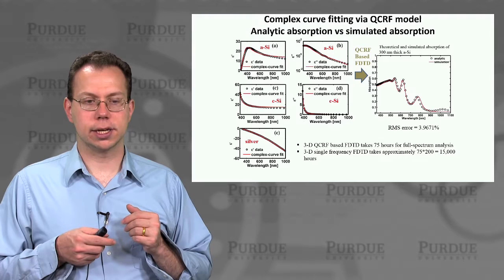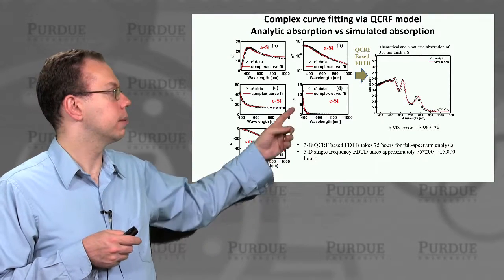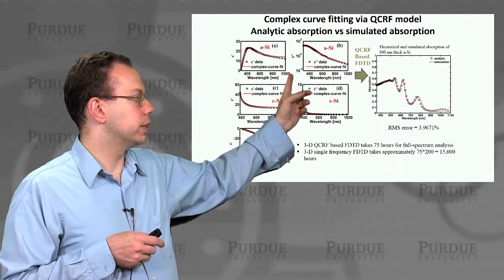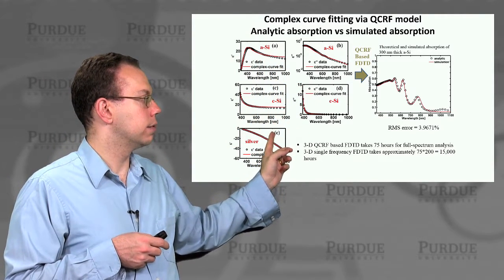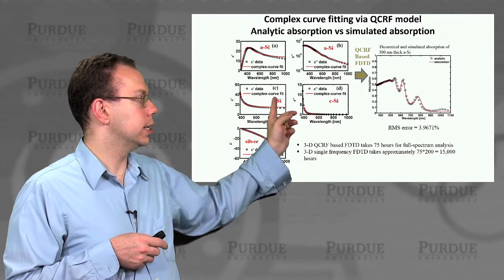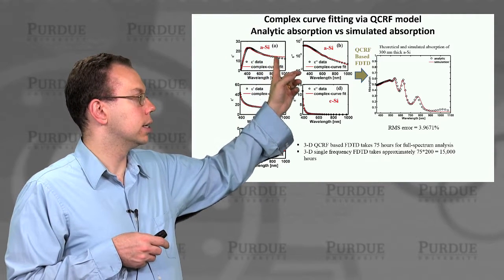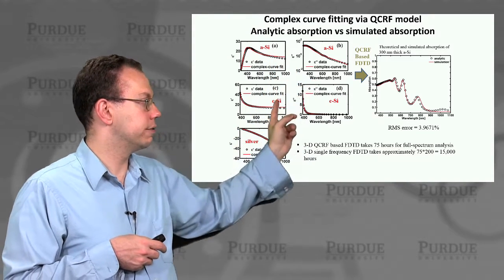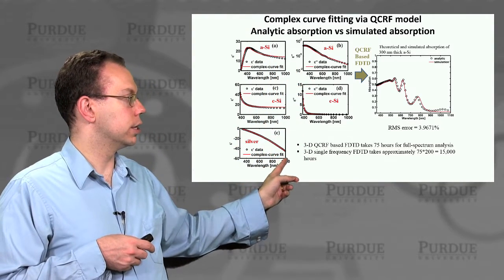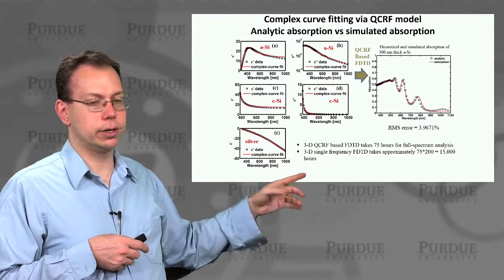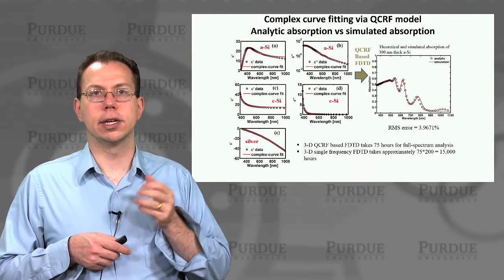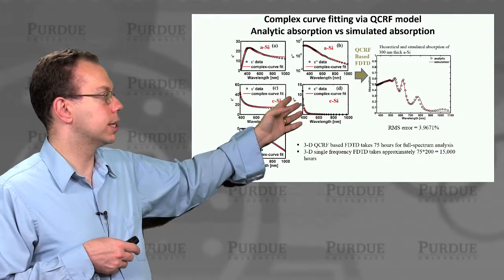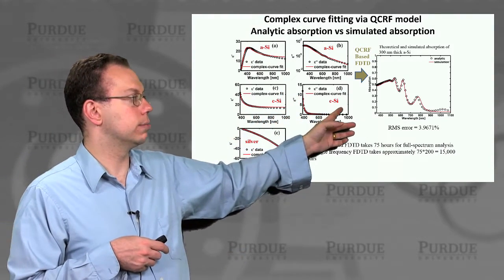Just to demonstrate this actually works, here are some examples showing the analytic absorption curves for amorphous silicon. And for crystalline silicon, you can see in both cases the experimental data, which is in dots, is very closely matched by the QCRF model. And then also silver is matched almost perfectly. So you can still capture a lot of this stuff that would be modeled well in Drude-Lorenz as well as the semiconductors that would otherwise be very hard to model.